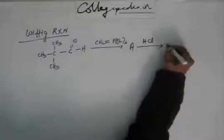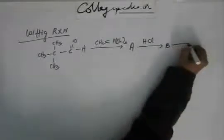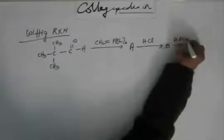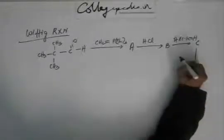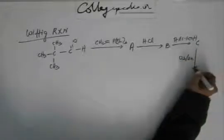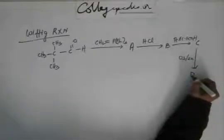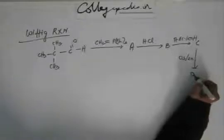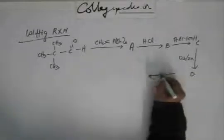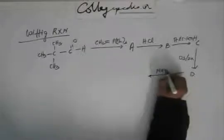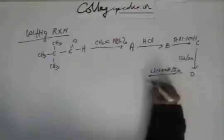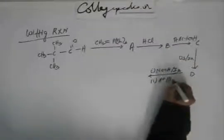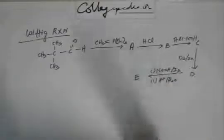On A, I added HCl, I got B. On B, if I add alcoholic KOH, I get C. On C, if I add ozone along with zinc, I get D. And on D, if I add a base along with iodine, I2, and then I protonate it, I get E. So identify A, B, C, D and E.